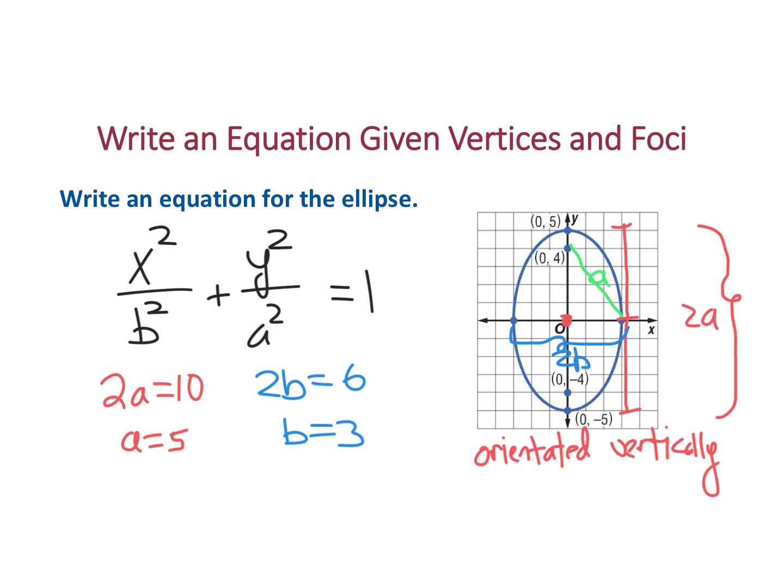You could also do it another way, because if you remember before, this would be our b value. This is going to be our c value, which we know is 4. We could use Pythagorean theorem and say this is 4 squared plus 3 squared equals a squared. We could do that, or use the Pythagorean theorem to find any of them, especially if we're given the foci and not any of the other points. So that could be also helpful.